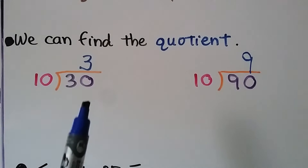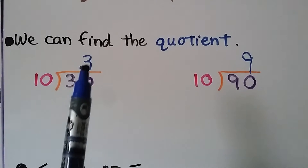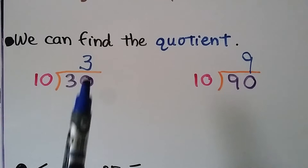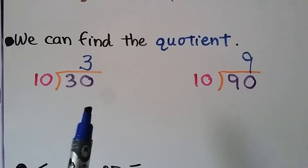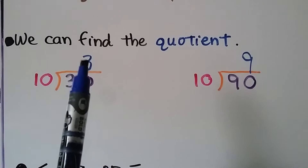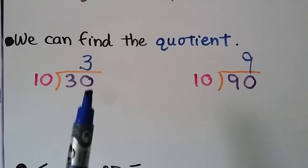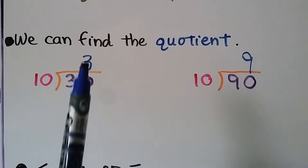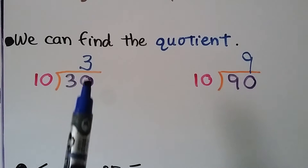Notice that the quotient is written above the ones place. This 3 is 3 ones, so we wrote it above the ones place for the 30 — that's how many times 10 fit into the entire number.